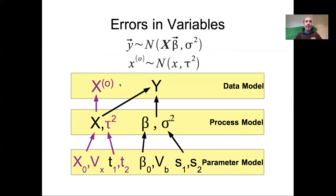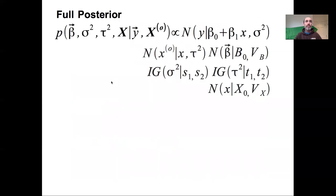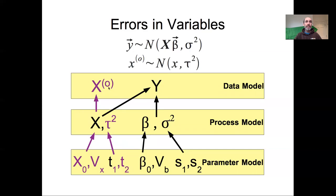This graphical model depicts the model we just went through. In purple, I've highlighted the things that are different between this model and the standard linear model. You'll notice that our X's are now part of the process model, and our latent X's are related to our Y's — with betas, sigmas, and priors on those, as before. We then have the observation error model between the latent X's and the observed X's, with no direct relationship between our observed X's and our observed Y's. And we have priors on our X's and priors on our taus.